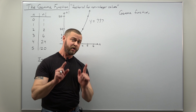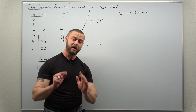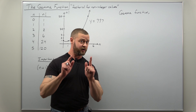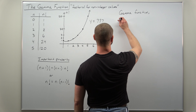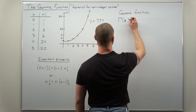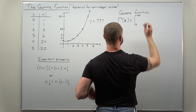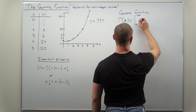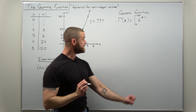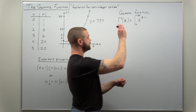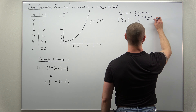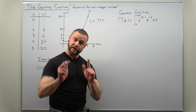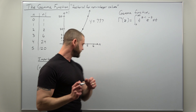The gamma function is defined as an improper integral. I'm going to write it in the standard version which uses z, a complex variable, but we're not going to go into detail about complex numbers as that's beyond the scope of this video. Gamma of z is defined as the improper integral from zero to infinity of t to the z minus one, times e to the negative t, integrated over t.